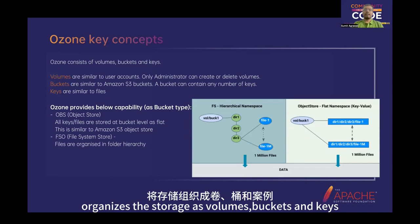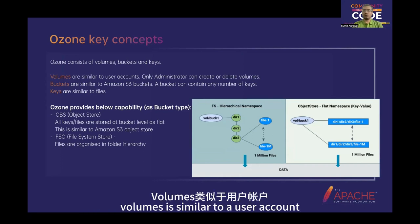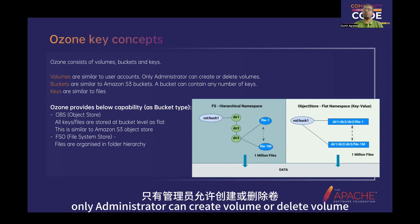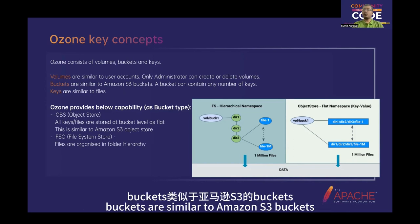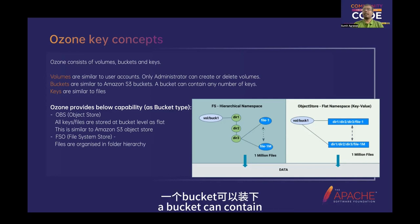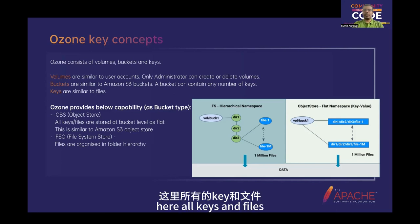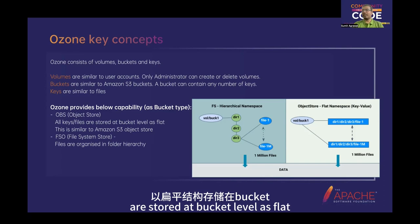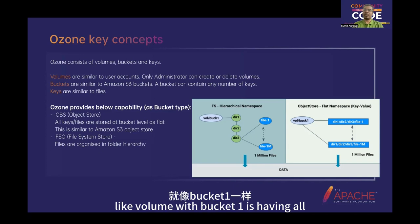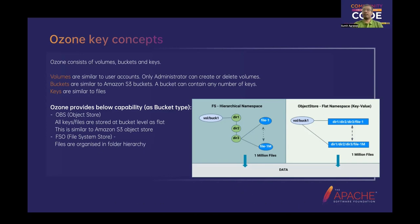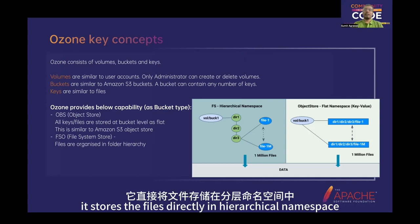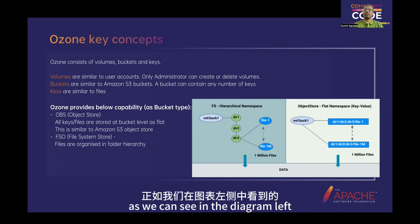Ozone organizes storage as volumes, buckets, and keys. Volumes are similar to user accounts — only administrators can create or delete volumes. Buckets are similar to Amazon S3 buckets and can contain any number of keys. Keys are similar to files. Ozone provides OBS (object store) capability where all keys and files are stored at the bucket level as a flat structure. It also provides FSO (file system optimized) store, which stores files directly in a hierarchical namespace.